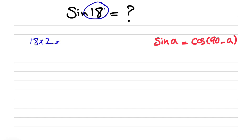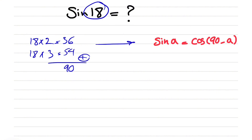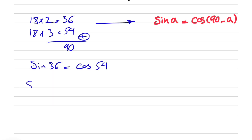We know 18 times 2 is 36 and 18 times 3 is 54. If we add these two together, we get 90, which is what we had in the identity. So we can say that sine of 36 equals cosine of 54, meaning sine of 2 times 18 equals cosine of 3 times 18.